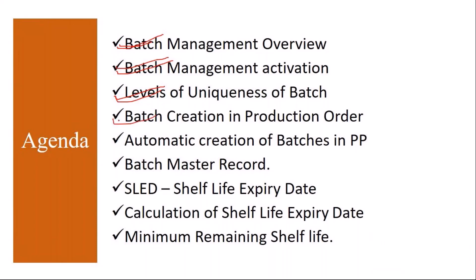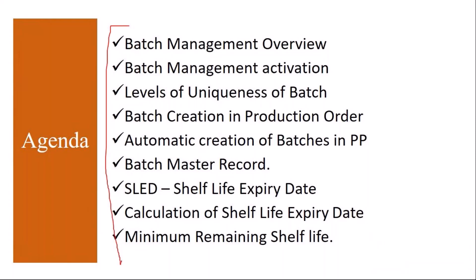Then batch creation in the production order — how to create batches in the production order, and how to create batches automatically in the production order, what settings we need to do. Then batch master record — what data is contained in the batch master record. Then we'll understand what is SLED — shelf life expiry date — and how the shelf life expiry date is calculated. And minimum remaining shelf life — what it is and its importance. These are the topics we'll be covering in batch management.